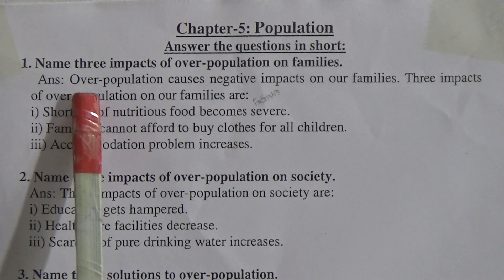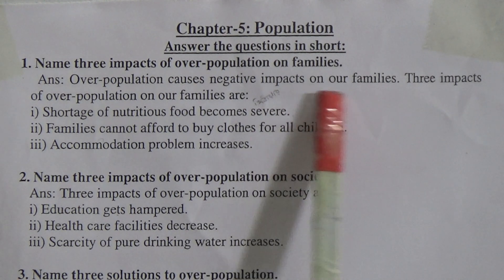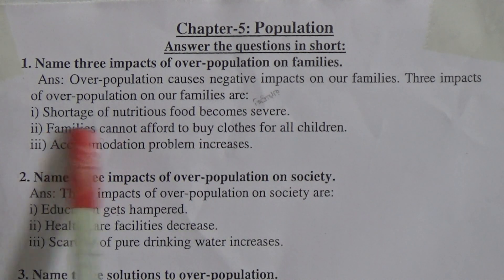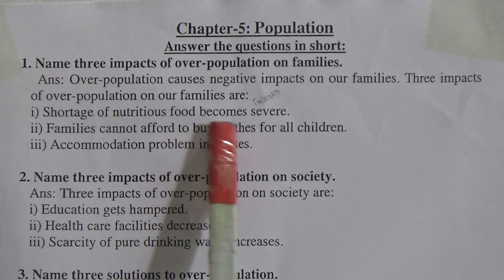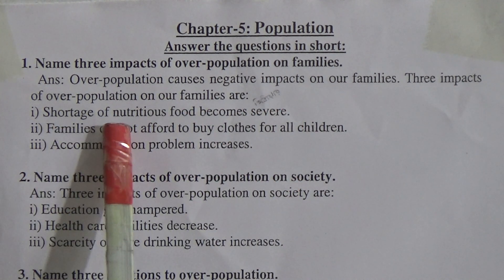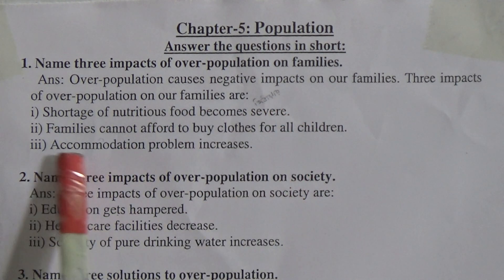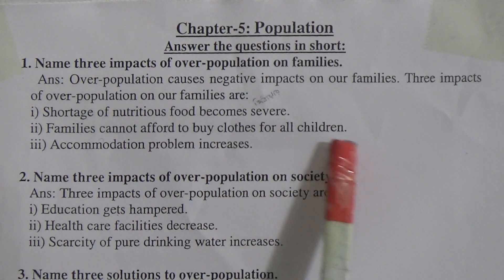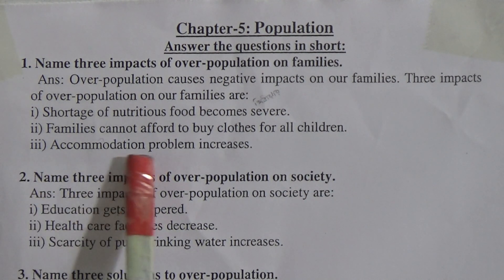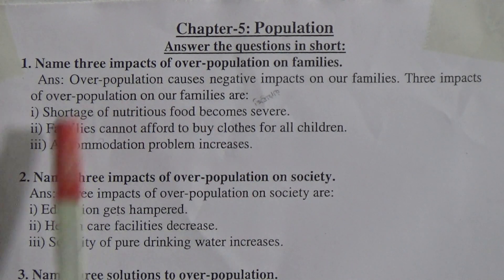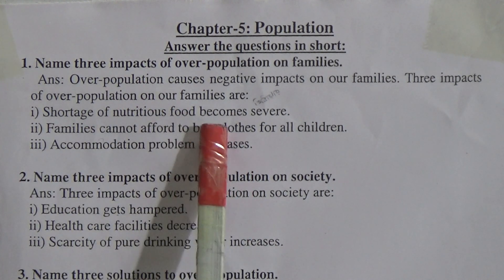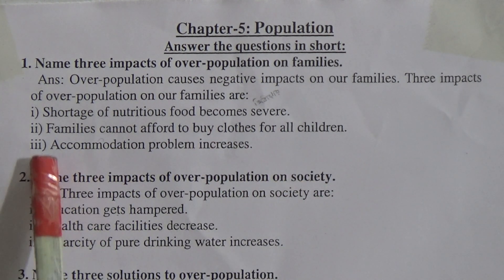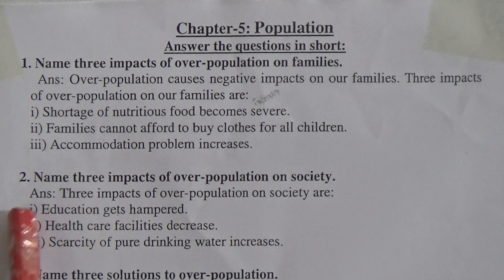Answer: Overpopulation causes negative impacts on families. Three impacts of overpopulation on families are: Number One — shortage of nutritious food becomes severe. Number Two — families cannot afford to buy clothes for all children. Number Three — accommodation problems increase.